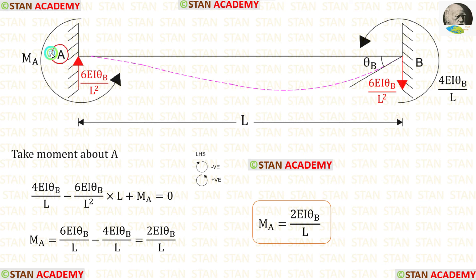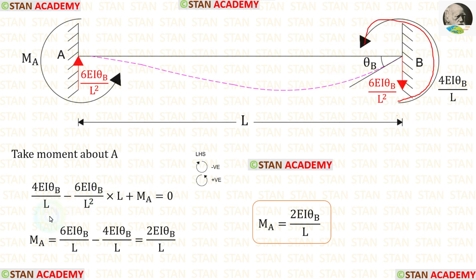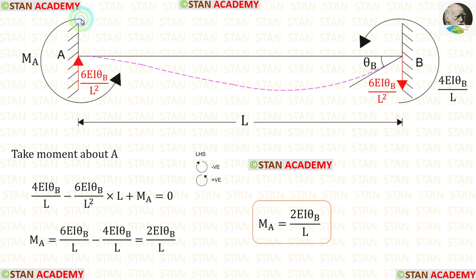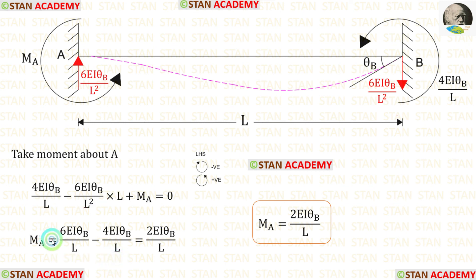Now let us take moments about A to find MA, moving towards the left-hand side. Clockwise is negative and anti-clockwise is positive. MB is anti-clockwise, so it is positive. RB is clockwise, so it is negative with distance L. Cancelling L terms and rearranging, 6 − 4 gives 2. Finally, MA = 2EI·θB / L.